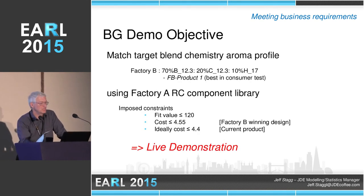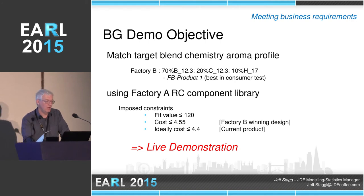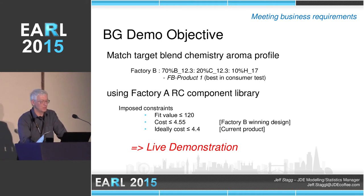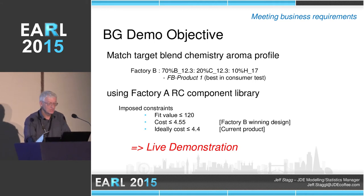Now I'll do a live demonstration of the blend generator application. The objective is to make a Factory B product out of Factory A. I'm going to use the Factory B target — the winning design from the consumer test — and use the component library from Factory A to see if I can match it. I'll impose constraints with a fit value of 120. The cost of the winning design out of Factory B was 4.55 units, but ideally the original blend out of Factory A was 4.4. So it would be good if I could find something sensory equivalent to the winning design from Factory B but at the same price as the original.